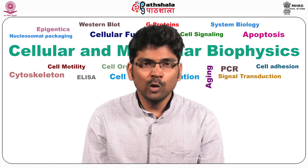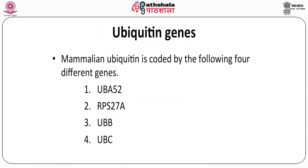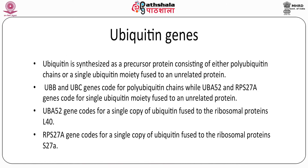Proteins are coded by genes. Mammalian Ubiquitin is coded by four different genes: UBA-52, RPS-27A, UBB, and UBC. Ubiquitin is synthesized as a precursor protein consisting of either polyubiquitin chains or a single ubiquitin moiety fused to another unrelated protein. UBB and UBC genes code for polyubiquitin chains, while UBA-52 and RPS-27A genes code for a single ubiquitin moiety fused to an unrelated protein. UBA-52 codes for a single copy of ubiquitin fused to ribosomal protein L40.